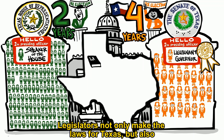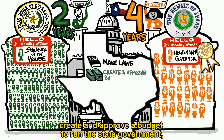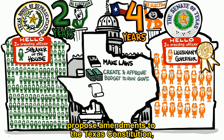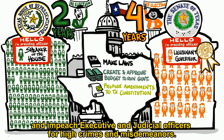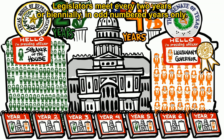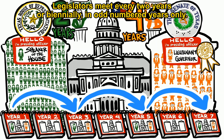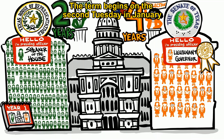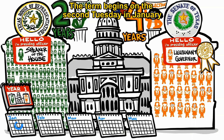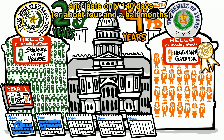Legislators not only make the laws for Texas, but also create and approve a budget to run the state government, propose amendments to the Texas Constitution, and impeach executive and judicial officers for high crimes and misdemeanors. Legislators meet every two years, or biennially, in odd-numbered years only. The term begins on the second Tuesday in January and lasts only 140 days, or about four and a half months.